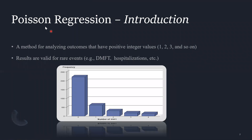We are covering Poisson regression, one type of count data regression. It is valid when we have positive integers — discrete values from zero onward — where most observations cluster at lower values and very few appear at higher values. Examples include DMFT score (Decayed, Missing, Filled Teeth), where most individuals have lower DMFT values. You cannot find an individual with all 32 teeth decayed, missed, and filled. Similarly, number of hospitalizations per month tends to cluster at lower values.